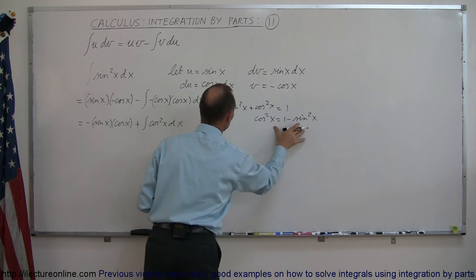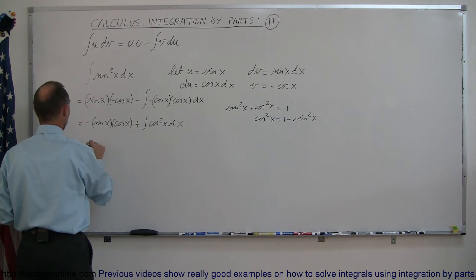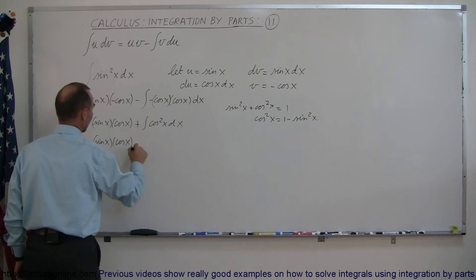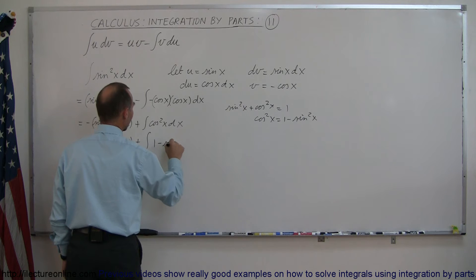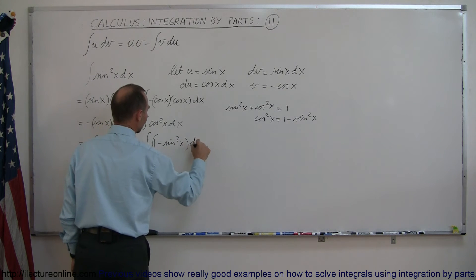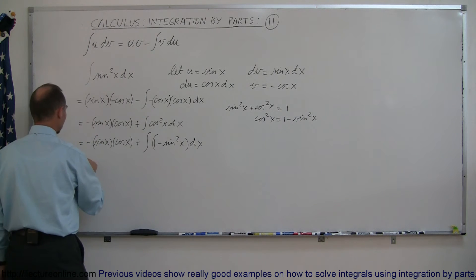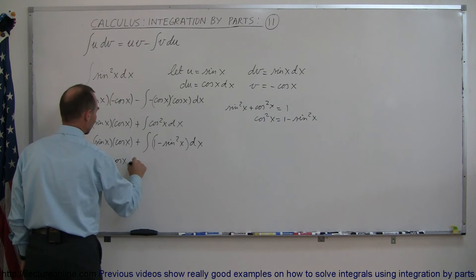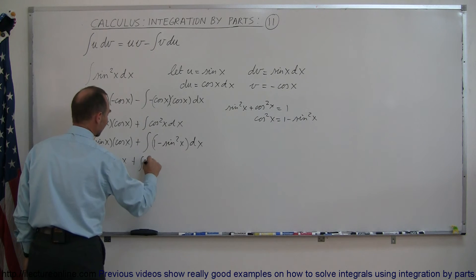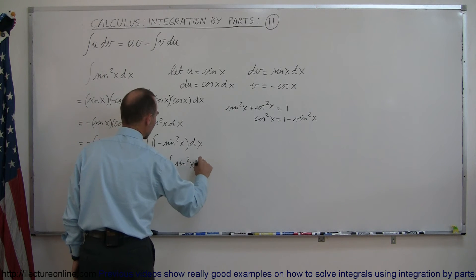If we substitute that in for cosine squared of x, let's see what we end up with. This is equal to minus the sine of x times the cosine of x plus the integral of (1 minus sine squared of x) dx. We can now write this as two separate integrals: minus sine of x times cosine of x, plus the integral of dx, minus the integral of sine squared of x dx.